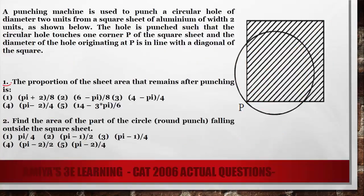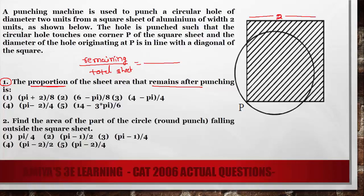Now we solve question 1 in a new page. We need to find the proportion, which means the required area out of the total. The required part is the remaining area after punching, out of the total seat area. The length of the square is 2, so the total area is 4. The area of the inner square is (1/2) × diameter × diameter = 2.